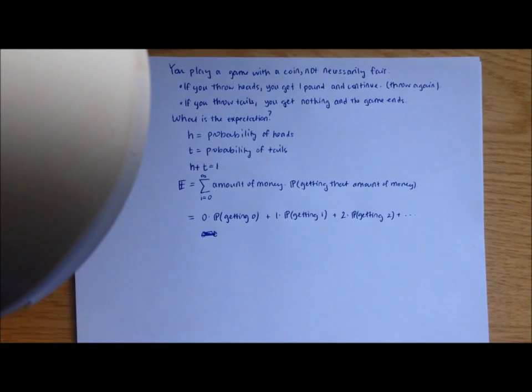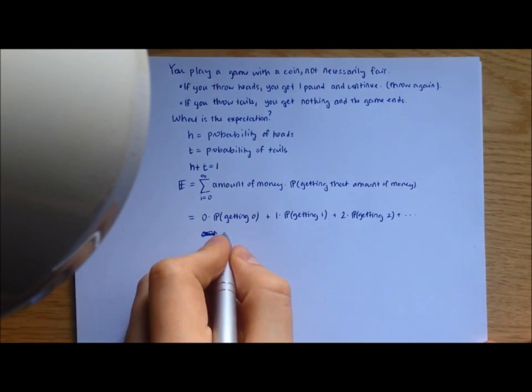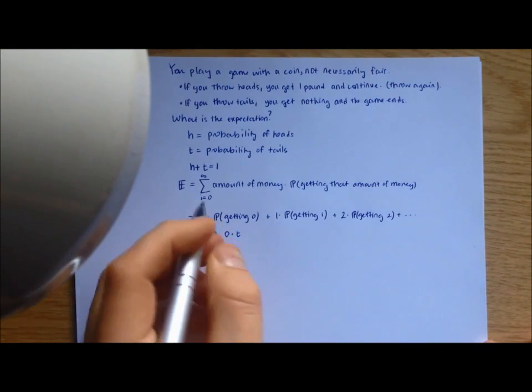Now I have to start actually finding these probabilities. So what's the probability of you getting zero? Well, there's only one way to get zero pounds in the game total. That's if you throw a tail right away, so your first throw is a tail. The probability of that happening is just t, so the first term is zero times t.